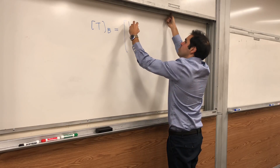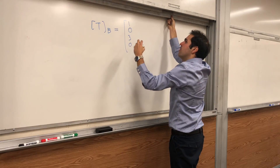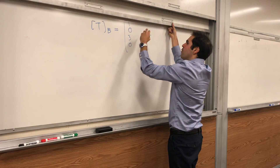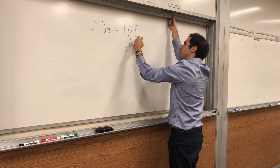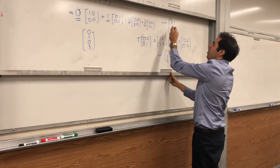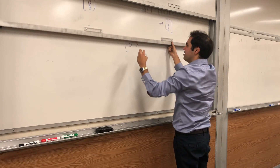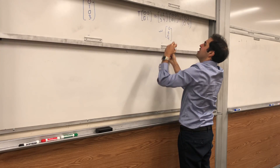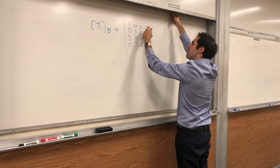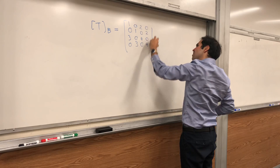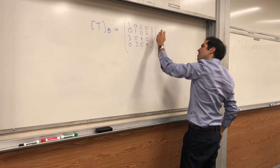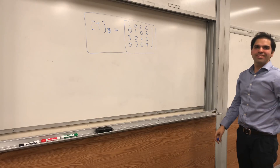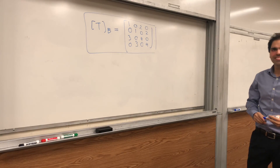Then you just put everything together. The matrix of T with respect to B has first column [1,0,3,0], second column [0,1,0,3], third column [2,0,4,0], and last column [0,2,0,4], with respect to basis B.